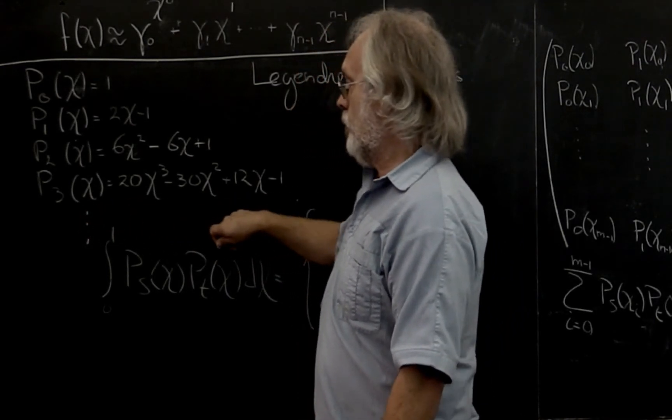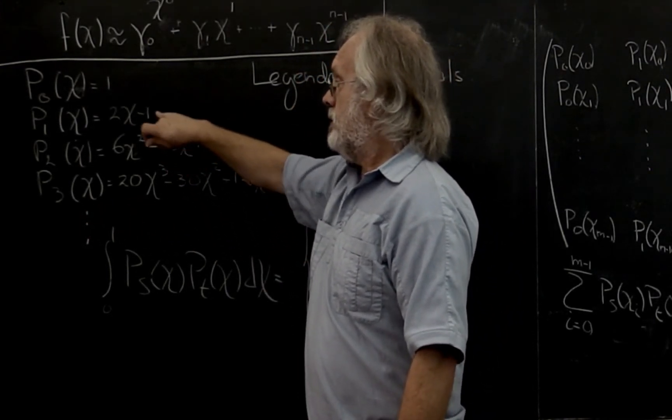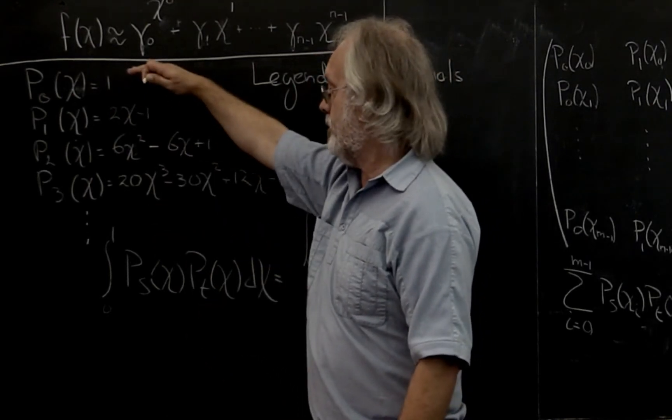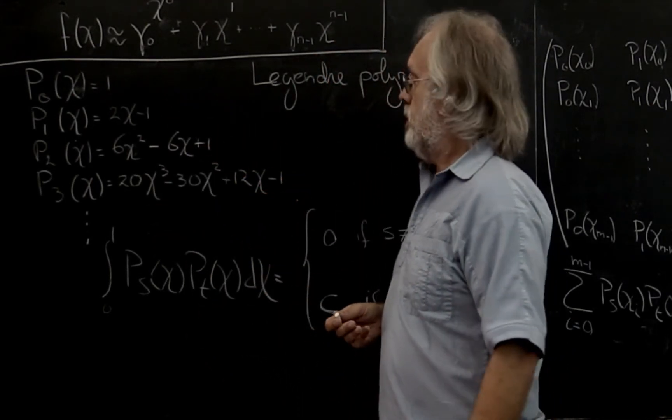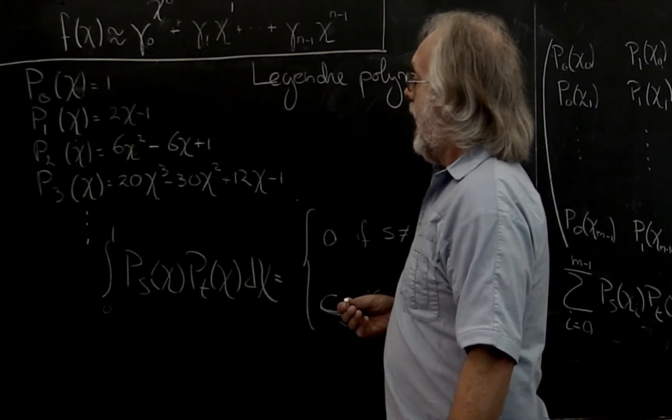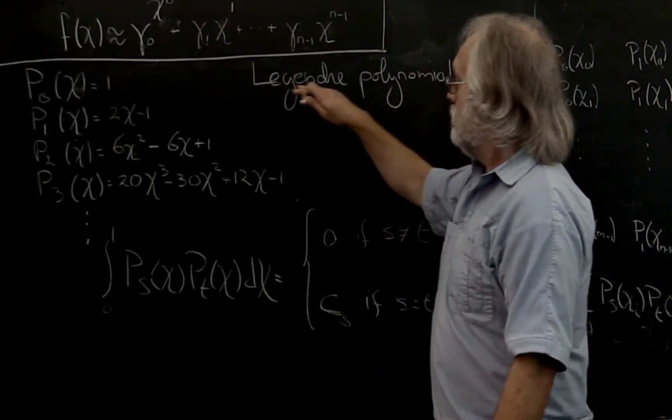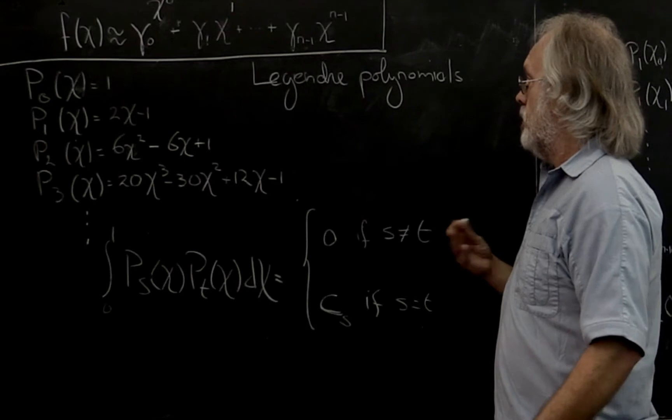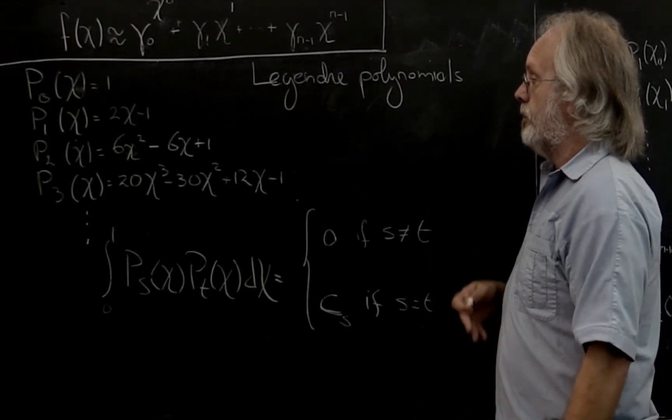Now there is actually a recurrence relation between these different polynomials. But here I've just written out a couple of the first ones. And these particular polynomials are known as Legendre polynomials on the interval from 0 to 1.